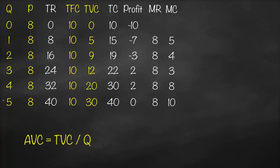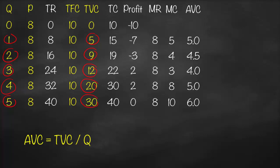Average variable cost is total variable cost divided by quantity. For Q1: 5/1=5; Q2: 9/2=4.5; Q3: 12/3=4; Q4: 20/4=5; Q5: 30/5=6.